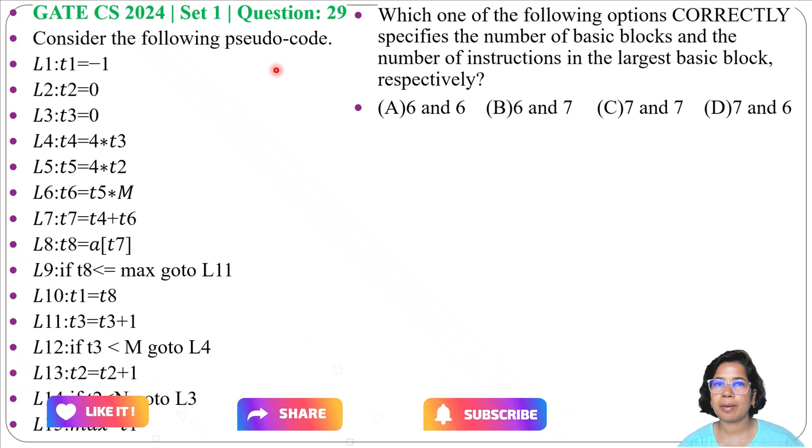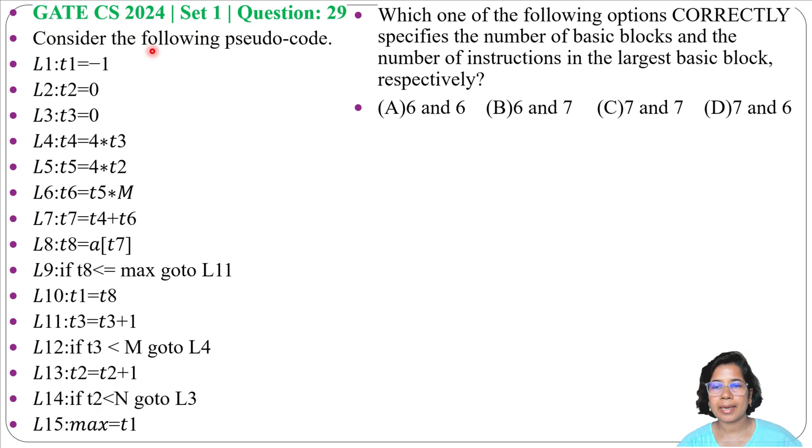Let's solve one previous question of compiler. This question was asked in GATE CS 2024 Set 1, Question 29. Consider the following pseudo-code. Which one of the following options correctly specifies the number of basic blocks and the number of instructions in the largest basic block, respectively? Four options are given.